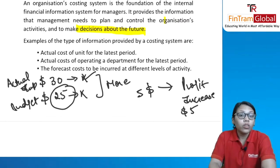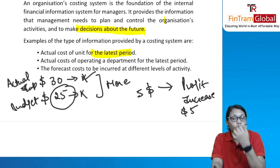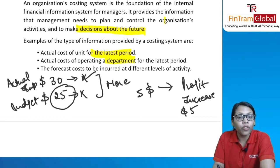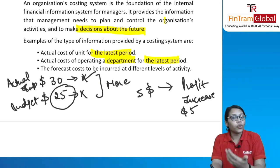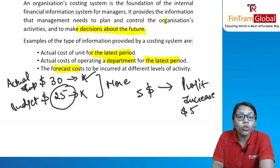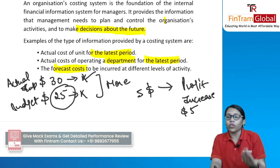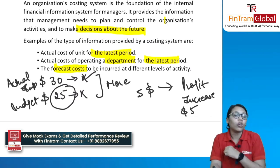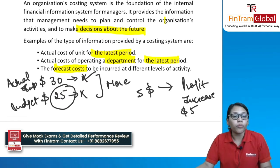You can calculate the actual cost incurred for producing one unit, the actual cost of operating a department for the latest period, and you can also forecast the cost you are going to incur for carrying on particular operations at different levels of activity — all easily evaluated using the concepts of management accounting.